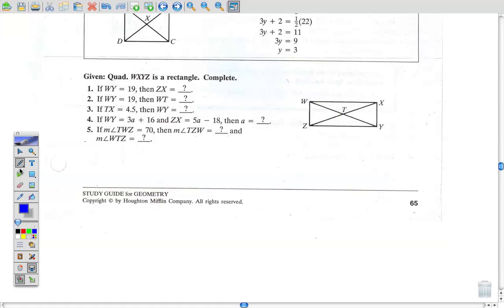Now I'm going to skip a couple here. I'm going to go down to number four. If WY, if this whole diagonal is 3A plus 16, and ZX is 5A minus 18, what's A? Well again, the diagonals are equal to one another, so you solve that for A.